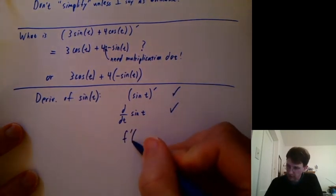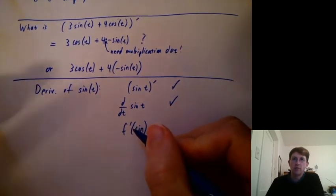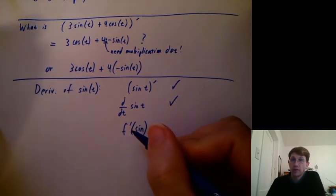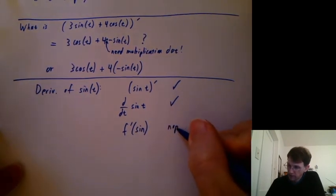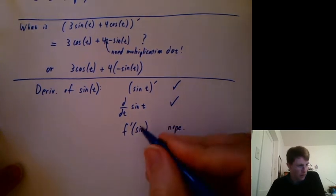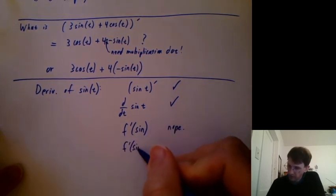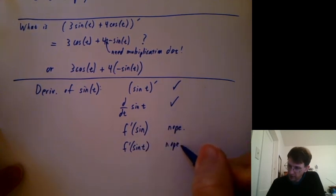How about f prime of sine? That seems to be asking f prime is what we write when we mean the derivative, but it's what we mean when we mean the derivative of f. And here it looks like we're passing sine to the derivative function. So that's too confusing. We don't want to do that. Or some people say f prime of sine t, that's also confusing.